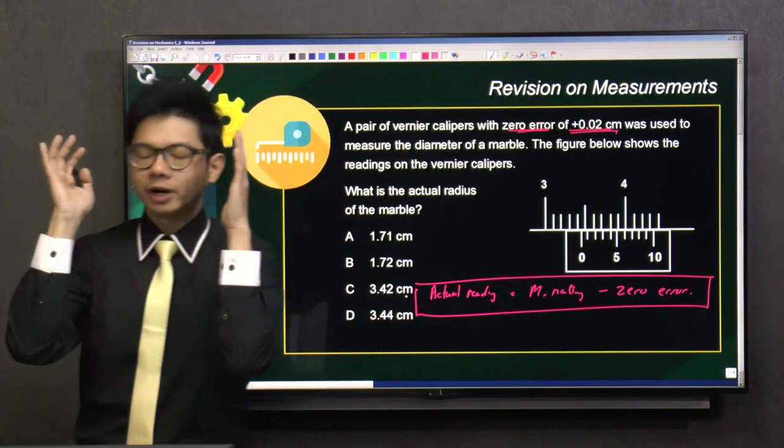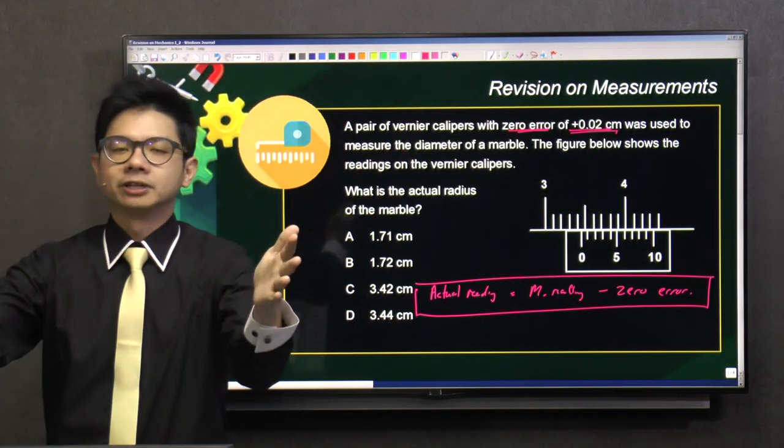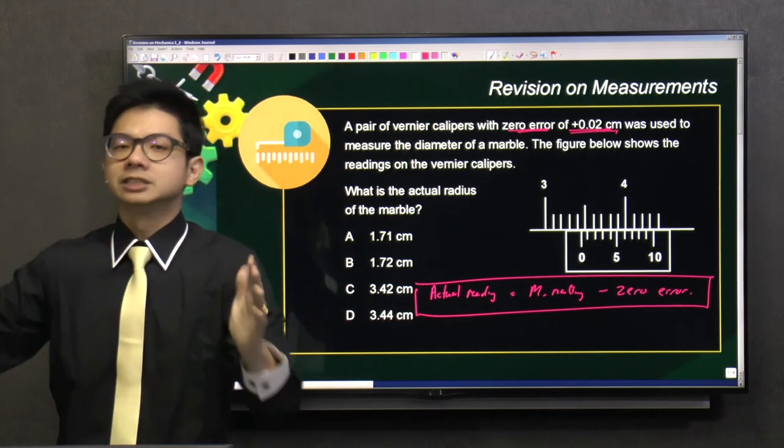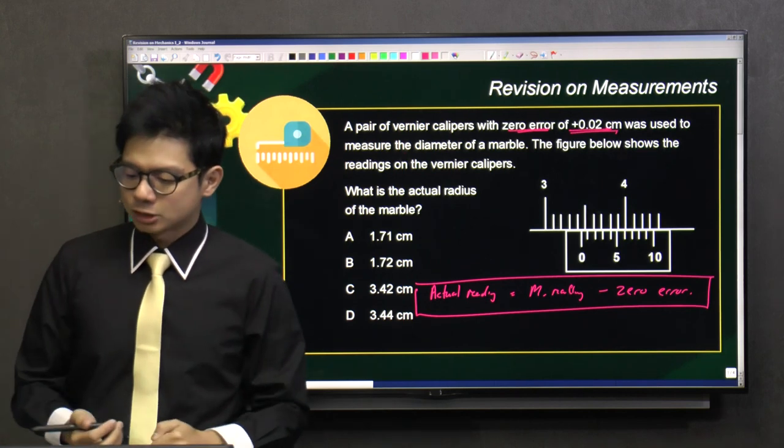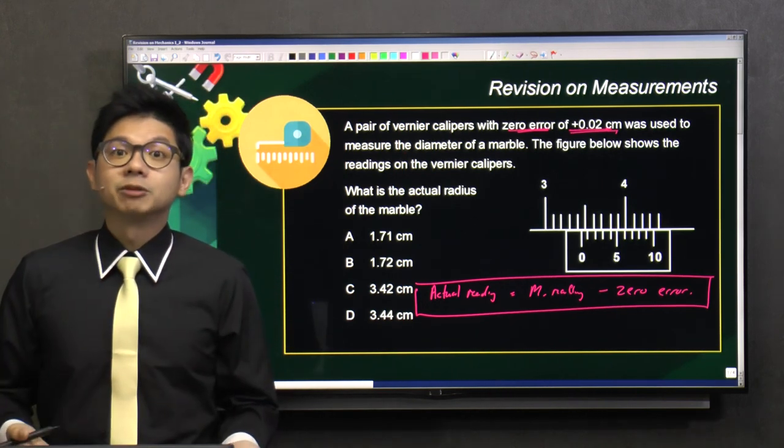Whether the zero error is a positive one or a negative one, you just take the measured reading minus the zero error. You'll get the actual reading. In this case, we have to just read what is the reading on this vernier calipers.